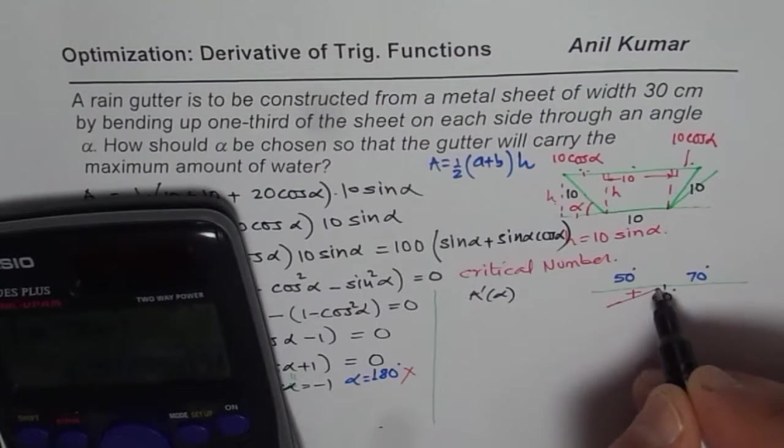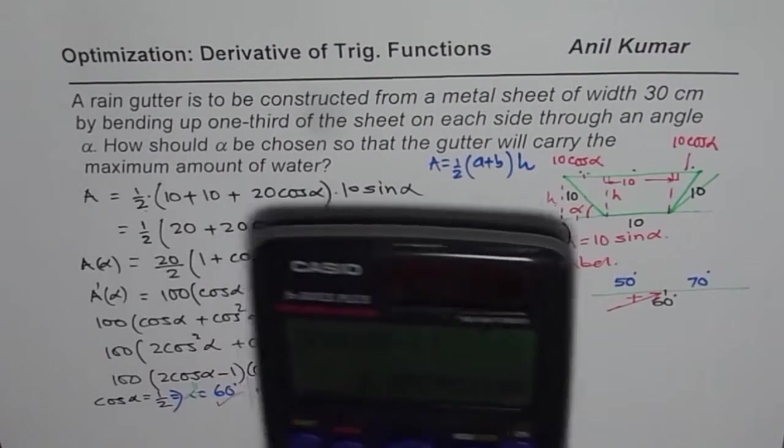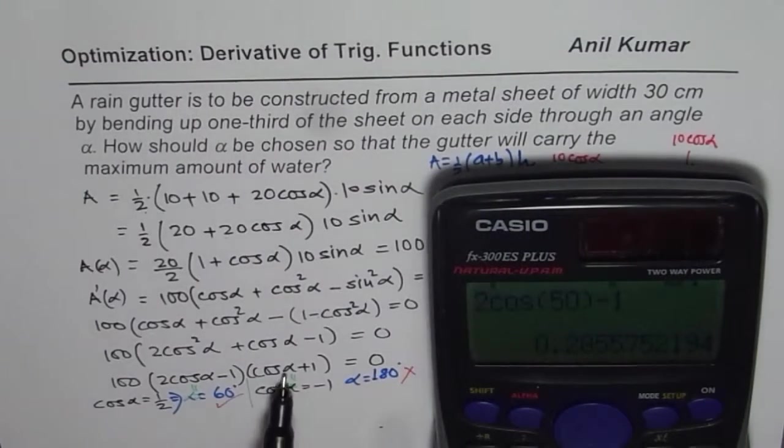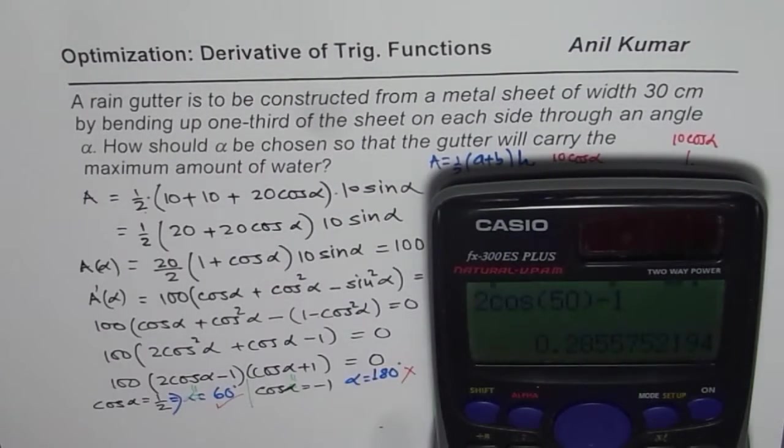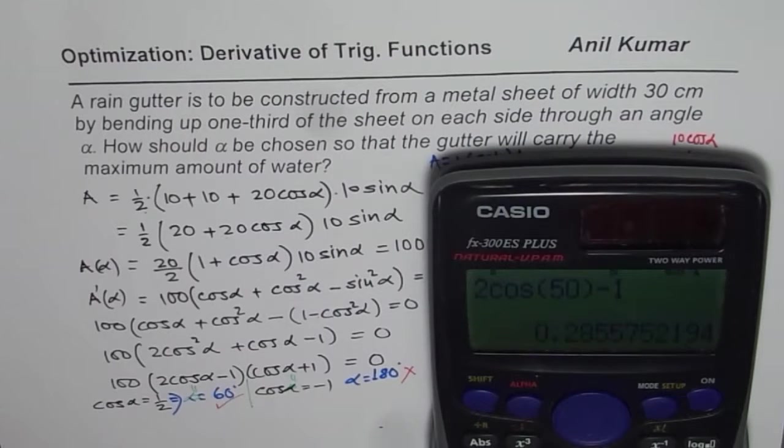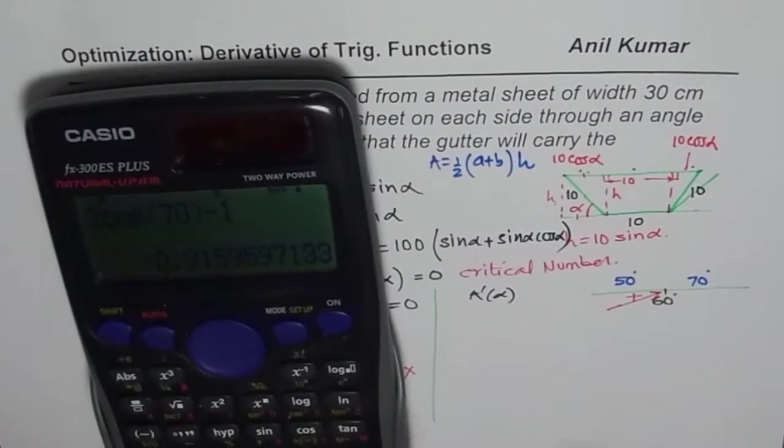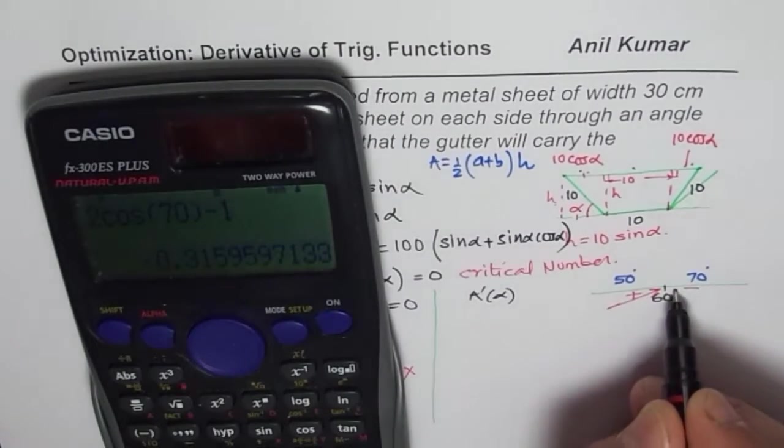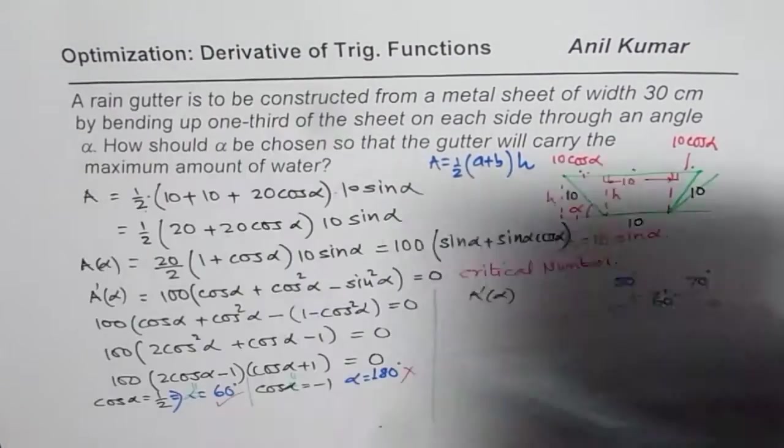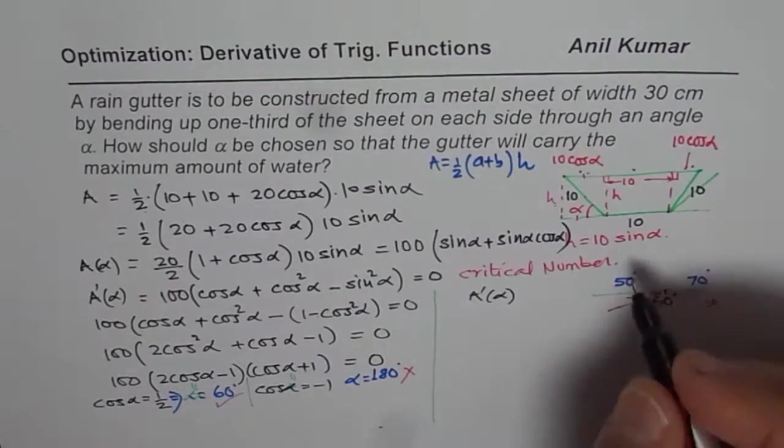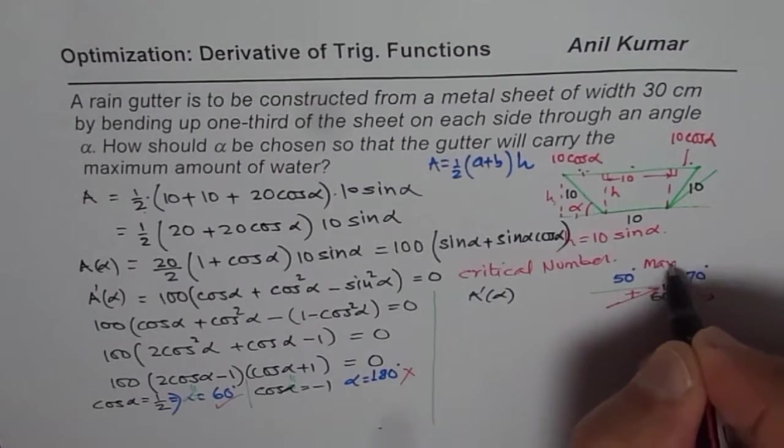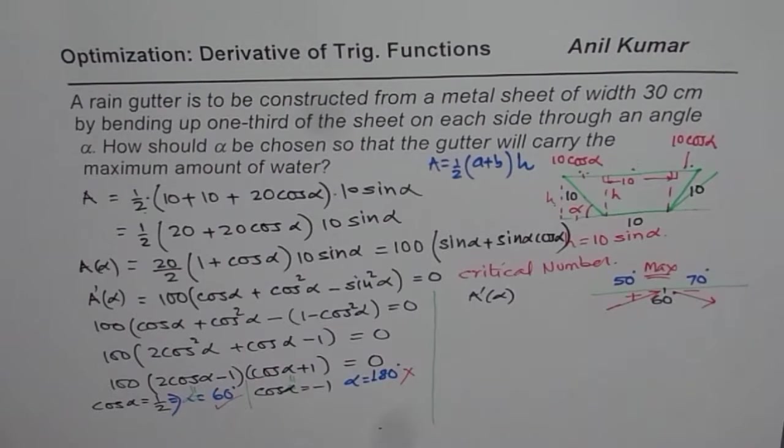Let us use the calculator to calculate the value. We have 2 times cos of 50 degrees minus 1 equals plus 0.285, which is positive. Positive derivative means function is increasing. On the other hand, if I write 70, we get 2 times cos of 70 minus 1 equals minus 0.3. So minus means negative. That clearly indicates we do have a maximum here, maximum area for 60 degrees.